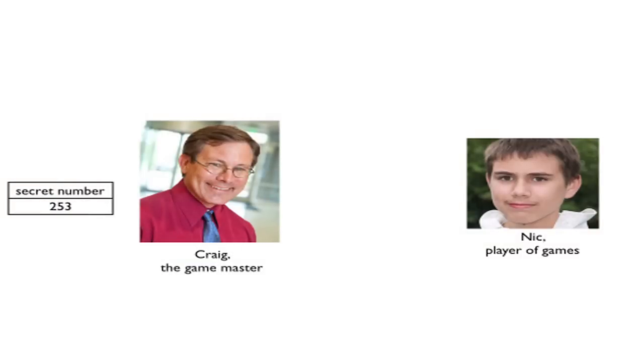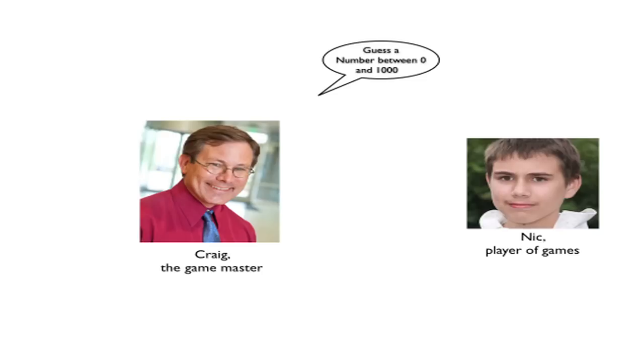Craig thinks of a secret number. This time it's 253. It's secret, so he hides it from Nick. Craig then asks Nick to guess a number between zero and a thousand. Nick thinks for a moment and says, okay, 500. Craig then tells him, wrong, guess lower.